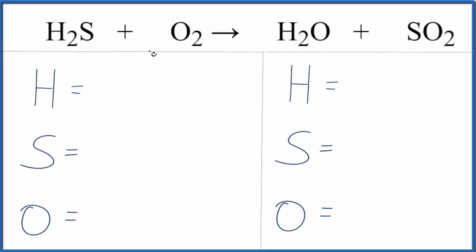In this equation, we have H2S plus O2, and we're getting water plus SO2. So let's count the atoms up on each side of the equation.